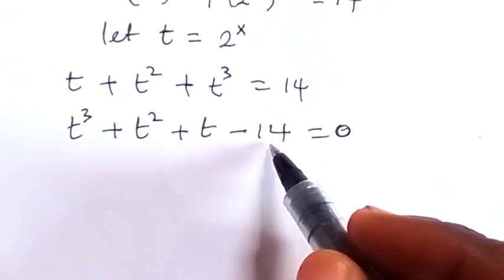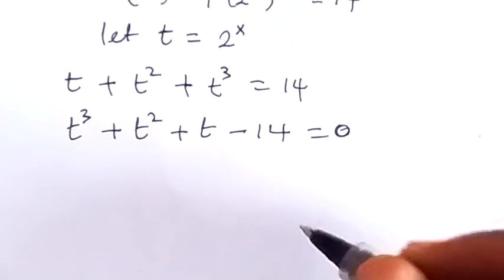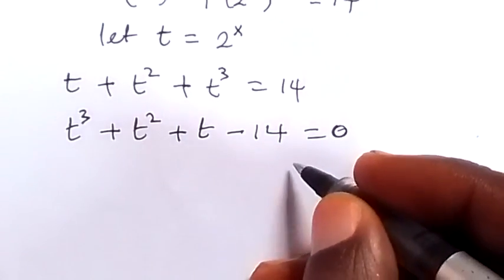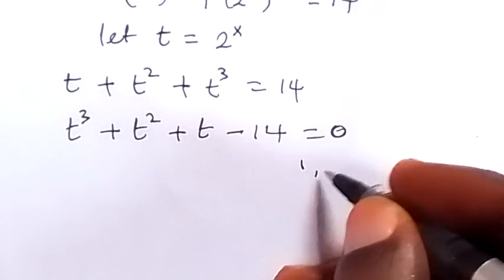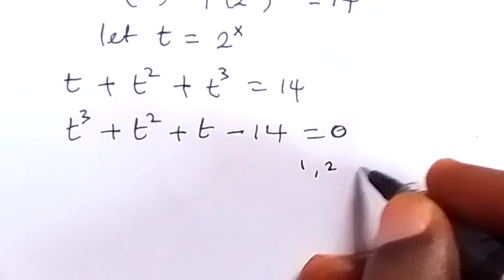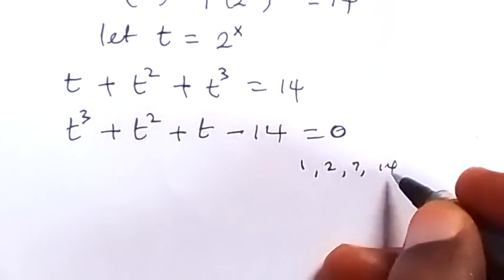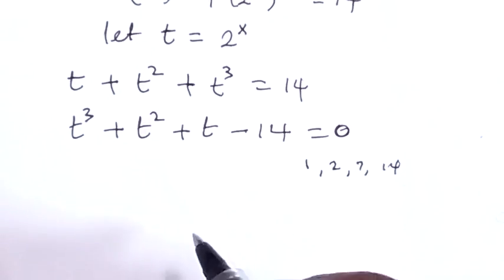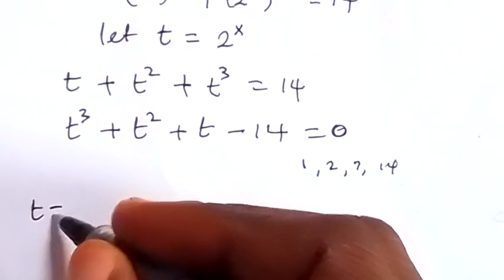The factors of 14 — one of them must be a solution. We start from plus or minus 1, 2, 7, then 14. We check which one, when substituted, gives us 0 — that one is the root. First, for t equals 1.